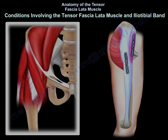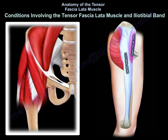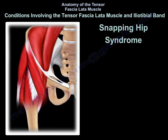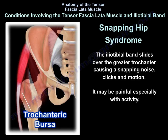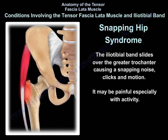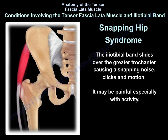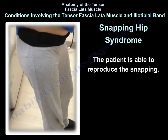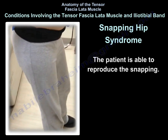Conditions involving the tensor fasciae latae muscle and the iliotibial band. Snapping hip syndrome: the iliotibial band slides over the greater trochanter of the femur, causing a snapping noise, clicks, and motion. It may be painful, especially with activity, and the patient is able to reproduce the snapping.